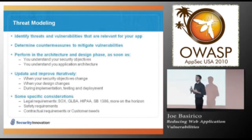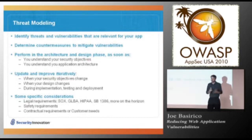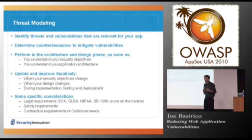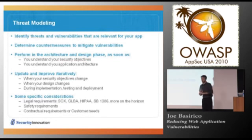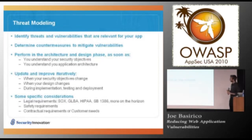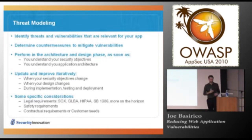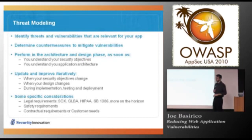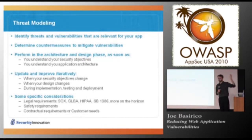The threat model is a living document. As we add features, as we go through phases, as we learn more about our software, we're going to update that threat model all the time because we're going to use it later — to create a test plan, to make sure developers are mitigating the right threats. We're also going to think about specific legislation and requirements like Sarbanes-Oxley, GLBA, HIPAA, PCI — which is the big one now — and Senate Bill 1386, which is now law.